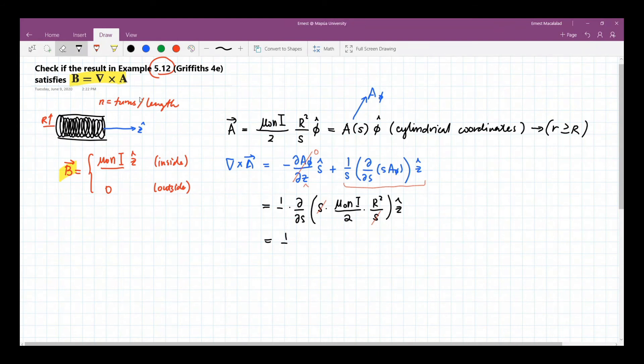So let's make it s, 1 over s. So s will be canceled with this, so this becomes a constant. So derivative of a constant is 0. So the magnetic field is 0. This is for outside.